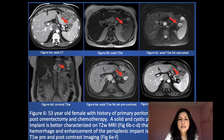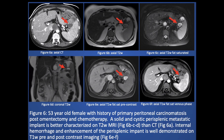Another case: a 53-year-old female with a history of primary peritoneal carcinomatosis, status post-omentectomy and chemotherapy. On CT, there is a hypodense lesion adjacent to the spleen, which is better characterized on the MR images. It shows internal hemorrhage and enhancement on the dynamic images, consistent with metastatic implants.